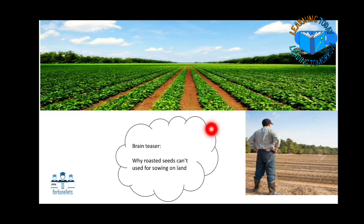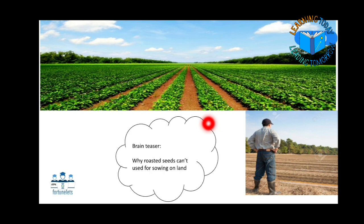Students, here is a brain teaser for you: why can roasted seeds not be used for sowing on the land? The raw seed has the characteristics of a living component where it can produce a new plant. Whereas in the fried ground nut, the living component is destroyed and it has become a non-living thing. Living things have the characteristics of living beings, and non-living things have the characteristics of non-living beings.